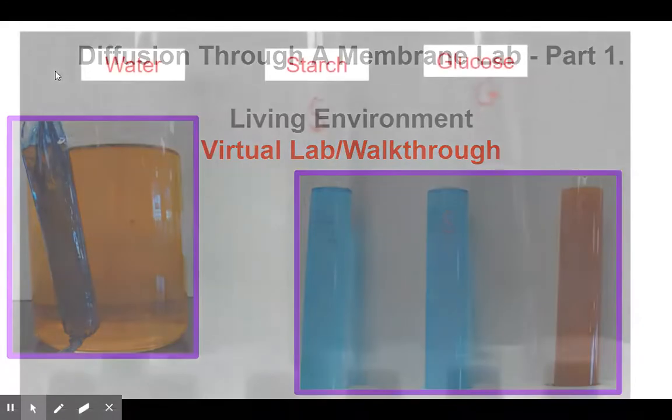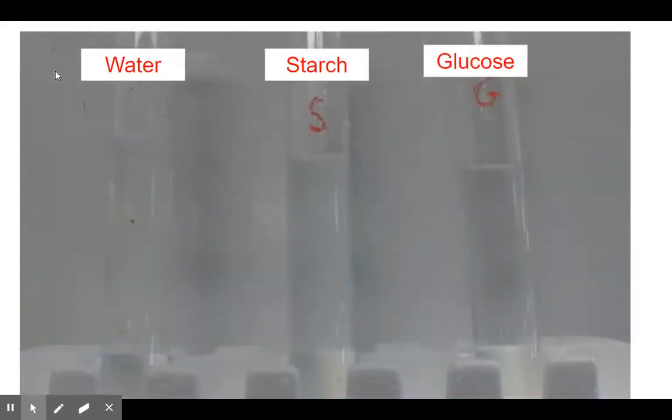The first thing we're going to talk about is indicators. Indicators test for the presence of something. Usually it's a color change, sometimes it's bubbling. It's usually something that could be observable. We're going to be testing for starch and glucose using certain indicators, and we're going to use water as a control.